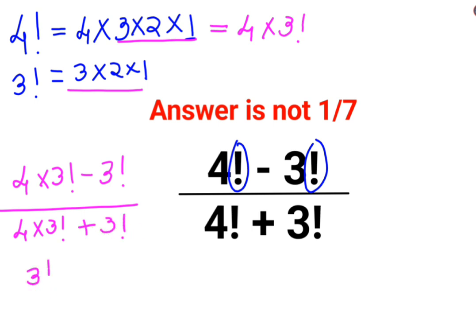Now what we will do is we will take 3 factorial common. So I will have 4 minus 1 upon 3 factorial common. Here I have 4 plus 1. So the factorials are cancelling and you are getting 4 minus 1 is 3 upon 4 plus 1 is 5.